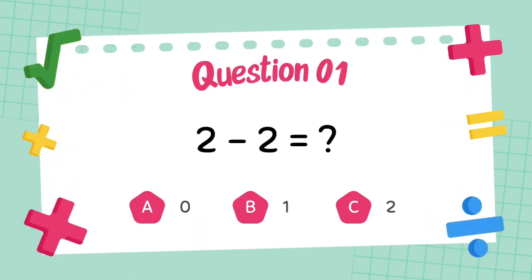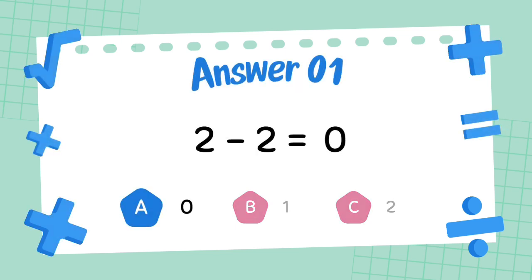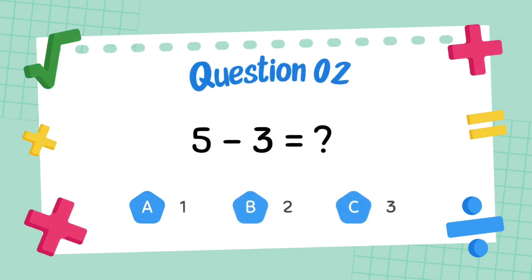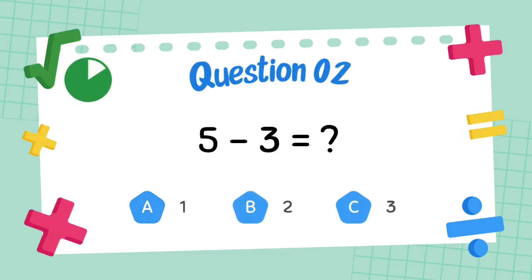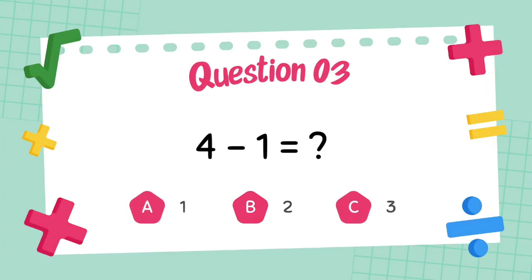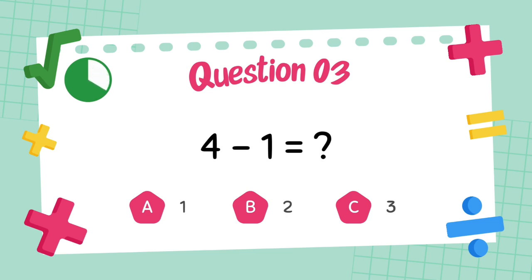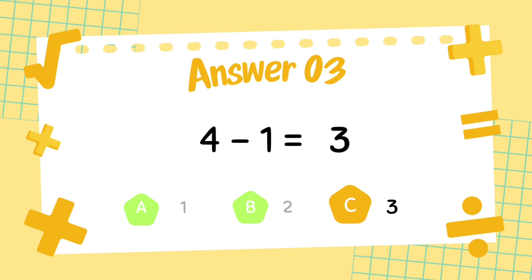What is 2 minus 2? The answer is 0. What is 5 minus 3? The answer is 2. What is 4 minus 1? The answer is 3.